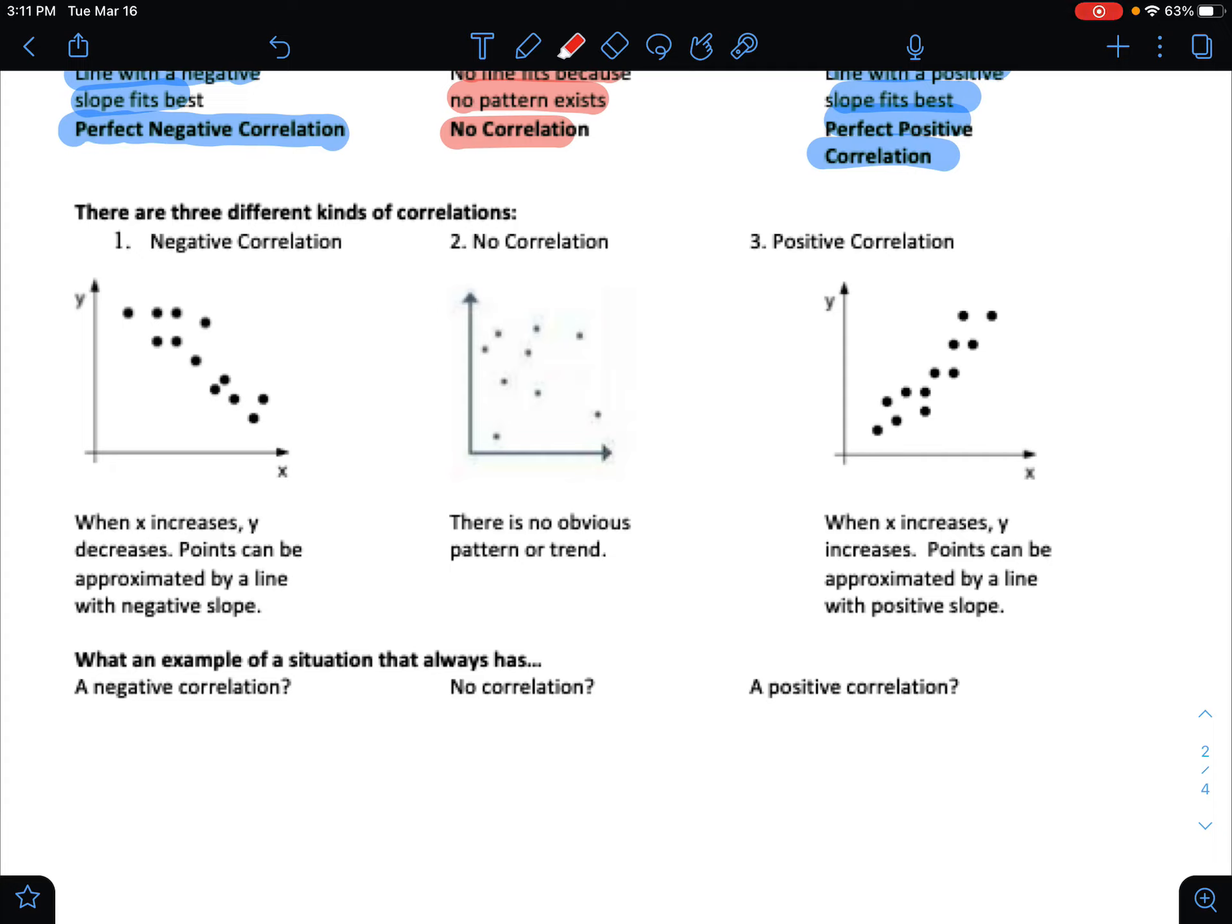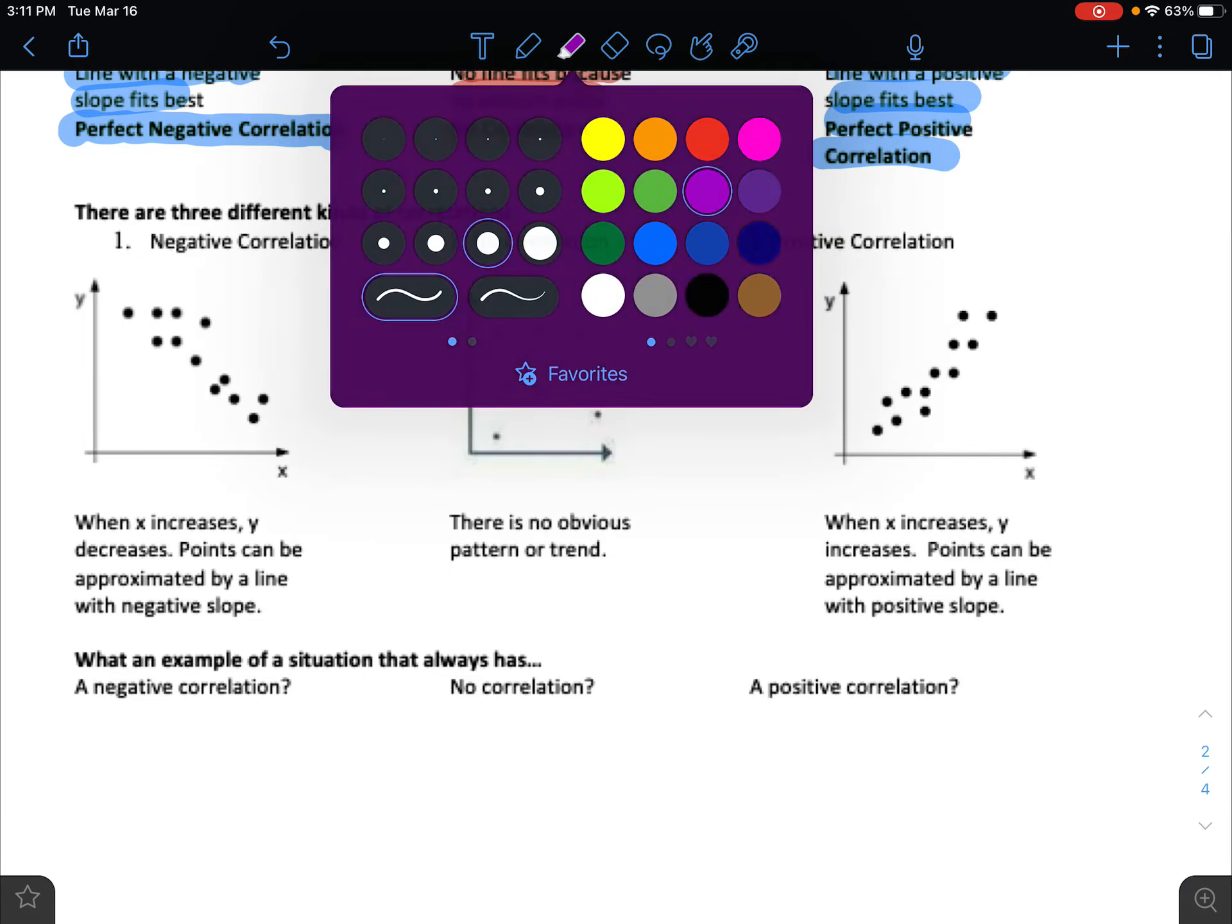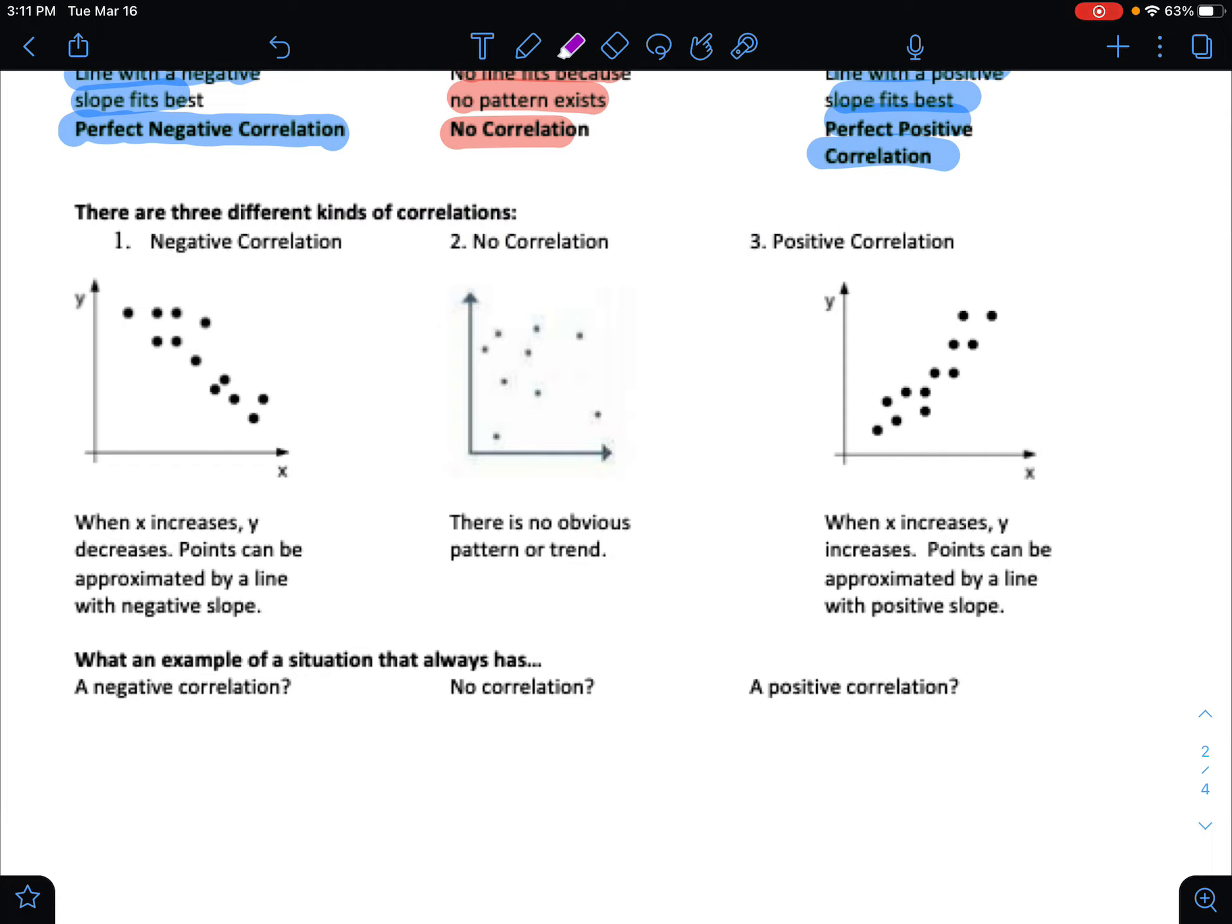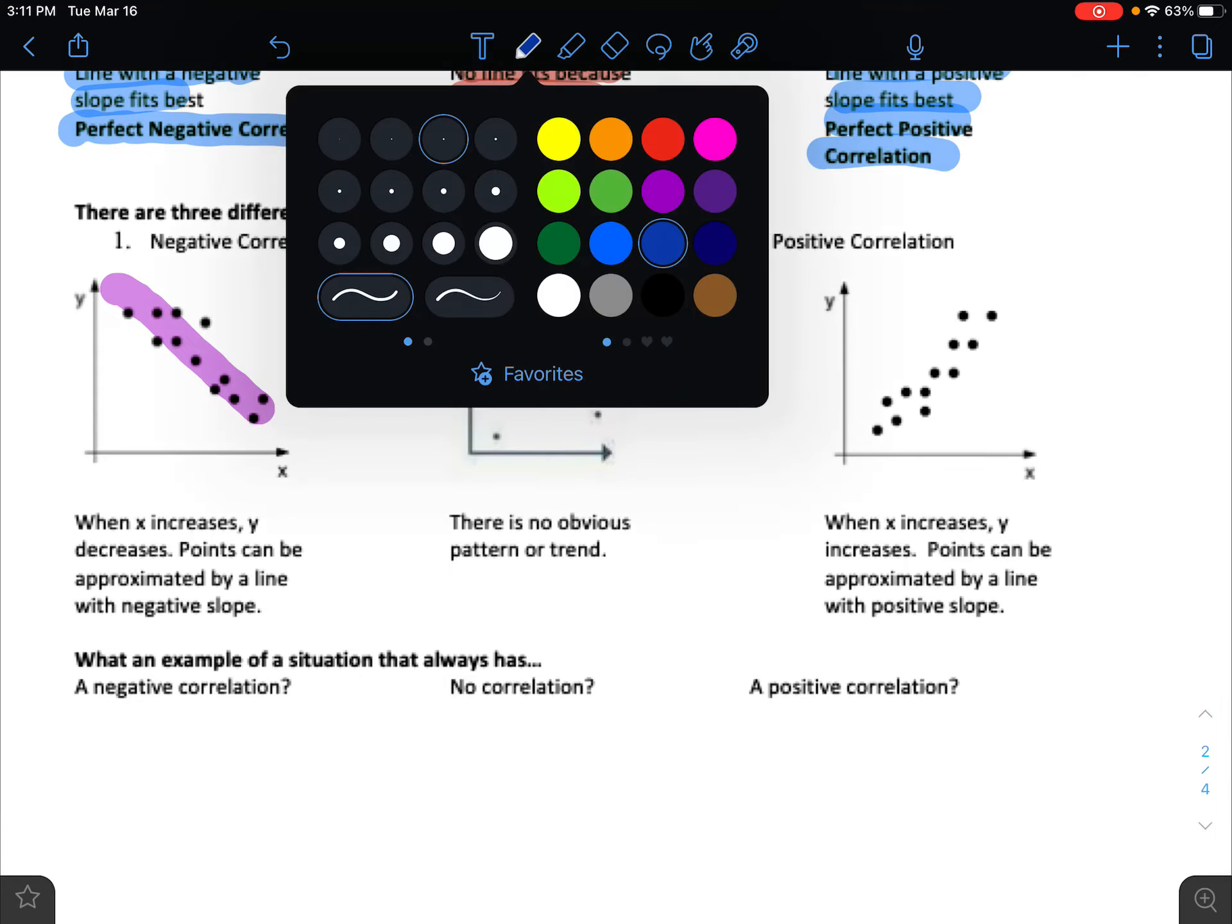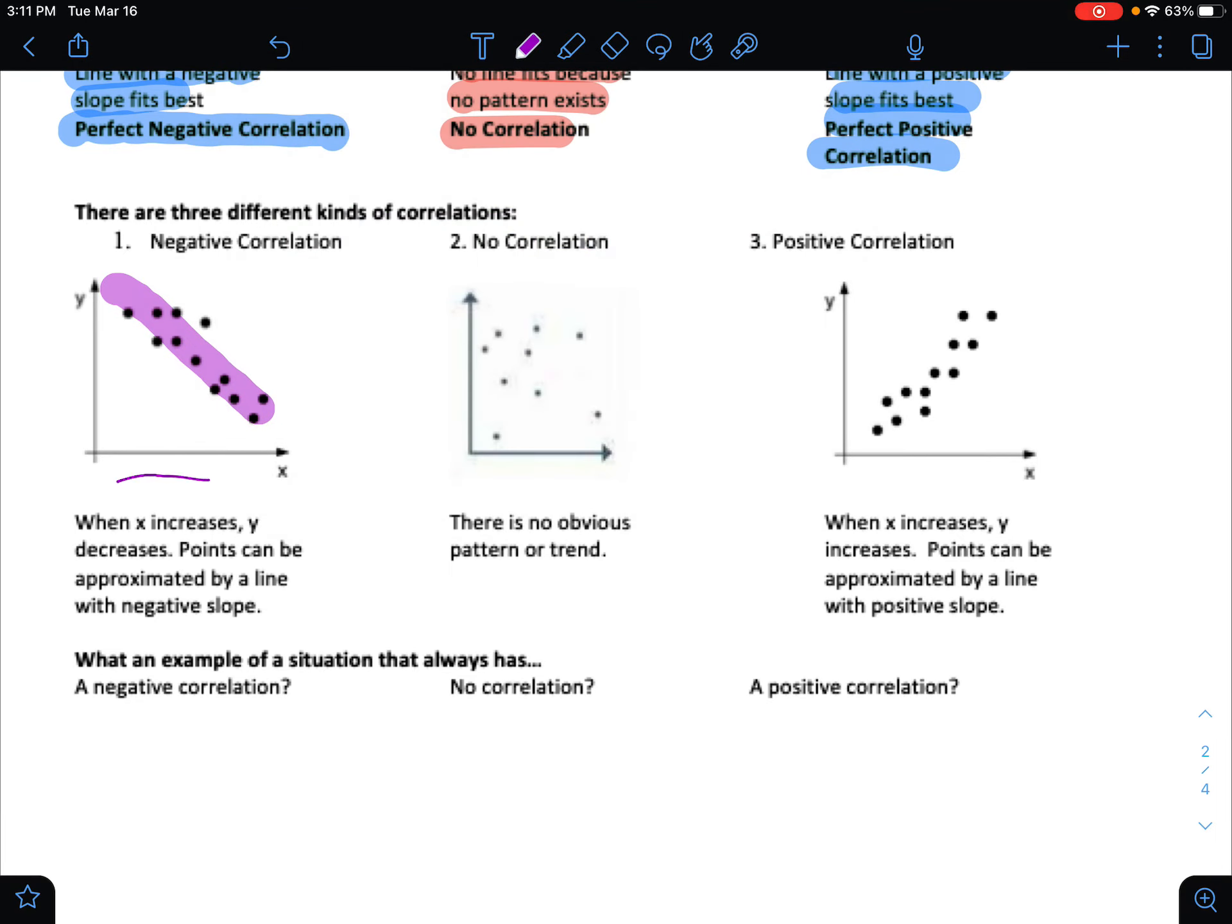But we do see in the first one that is comparing two variables that it is generally sloping in a negative direction and it is loosely linear. As x is going up, as x is increasing, y is decreasing. The points are lining up into a line with a negative slope.